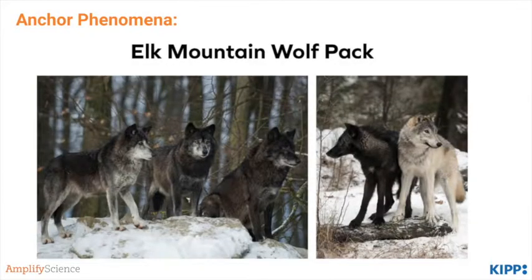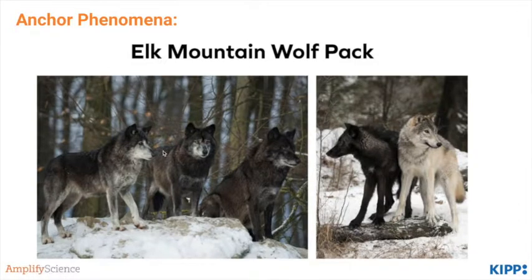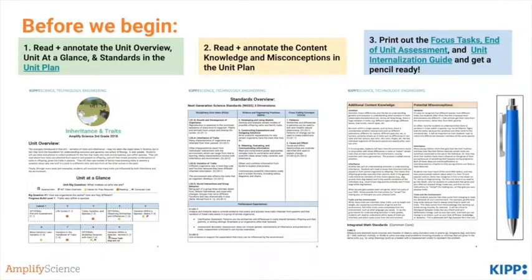The unit begins by asking the question: why is there a pack of wolves with one wolf, wolf number 44, that looks so much different from the other wolves in the pack? Wolf 44 is white while the rest of the wolves are gray and black with only tiny bits of white. Before we begin this mystery, please make sure you've read and annotated the unit overview and the other following documents. Please also print out the focus tasks, end of the unit assessment and unit internalization guide, and have a pen or pencil ready.